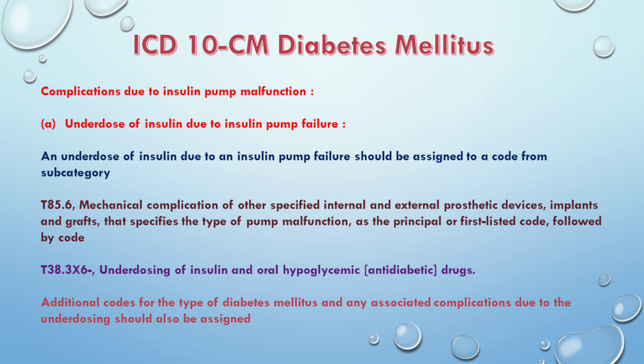After this, an additional code for the type of diabetes mellitus and associated complication in the underdosing should also be assigned. If the type of diabetes and the diabetic complication is available, it will be reported as an additional diagnosis.